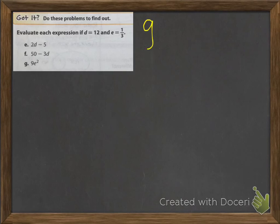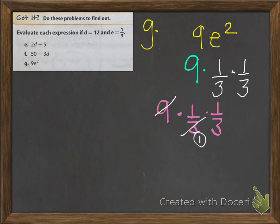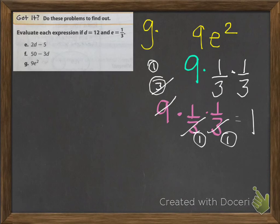For G, the original problem is 9E squared. Substitute: 9 times 1/3 times 1/3, because it's 1/3 squared. Then cross-simplify: divide 9 and a 3 to get 3 and 1; then cross-simplify again because we have a 3 and a 3, giving 1 and 1. All the way across the board we have 1, so our final answer is 1.